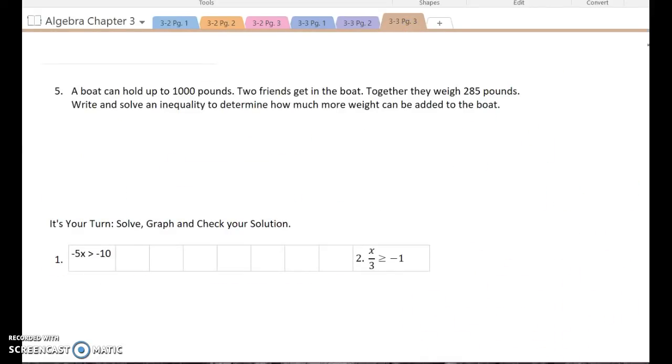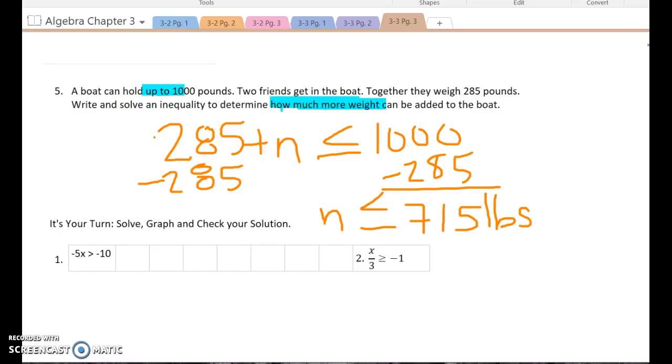Finally, we can also see these as story problems. So it's very important how we read them. A boat can hold up to, that's a key piece there, up to a thousand pounds. So what I ask myself is, can it hold more than a thousand pounds? The answer is no. It holds less than or equal to a thousand pounds. A thousand is the most it can go. It will hold less than that or up to that. Now, two people get in the boat together, they weigh 285 pounds. So how the question now goes on and it says, how much more weight could be added to the boat? So we want to know how much more. So plus some number more that could be added. So now again, we just treat it like it's an equation and solve it.